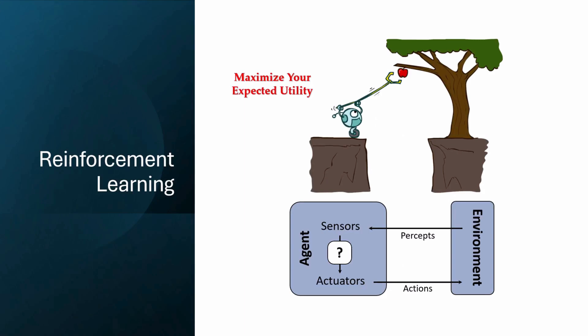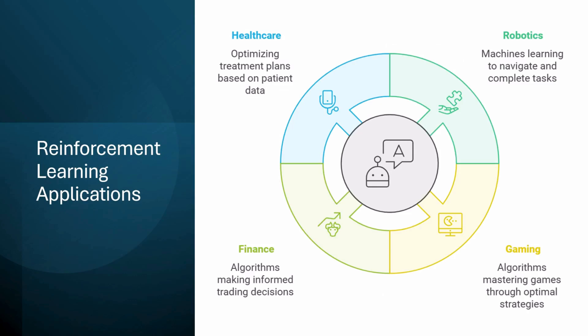In reinforcement learning, an agent explores various actions within its environment and learns to choose those that maximize cumulative rewards over time. The goal is to develop a policy that dictates the best action to take in a given state to achieve the highest possible reward. This is commonly used in robotics, gaming — where algorithms like AlphaGo have defeated human champions — as well as finance for trading decisions and healthcare for optimizing treatment plans.